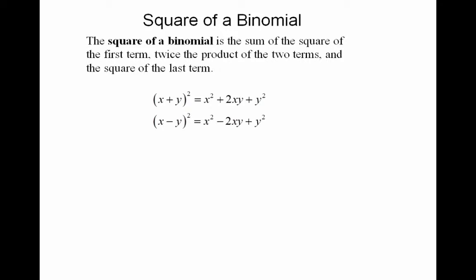The square of a binomial is the sum of the square of the first term, twice the product of the two terms, and the square of the last term.